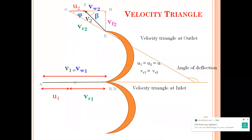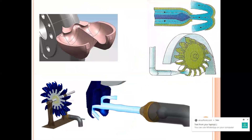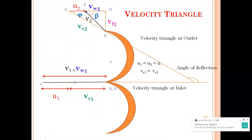Now coming to the velocity triangle. As this figure shows, it is coming at inlet and outlet. Here it is all directed to this side, so your beta angle is always acute. When I come to my inlet, your theta and alpha are both zero because it is horizontal. So when I come to my velocity triangle, I can see it is in the same line — so my v1 and u1 are in the same line.